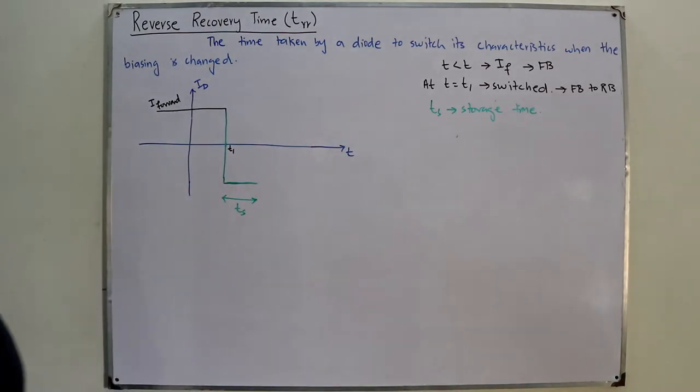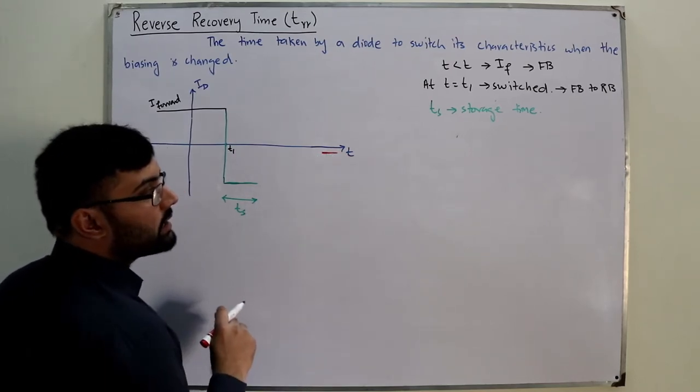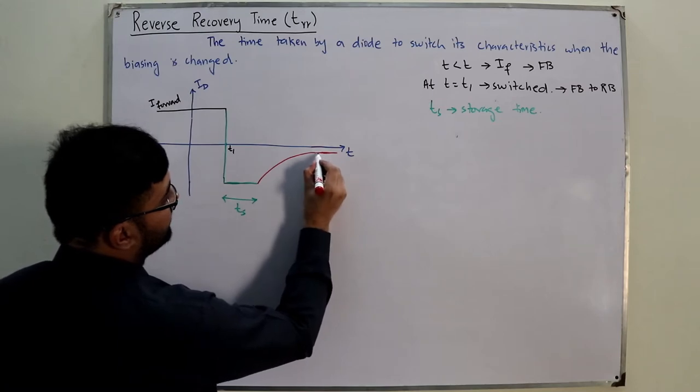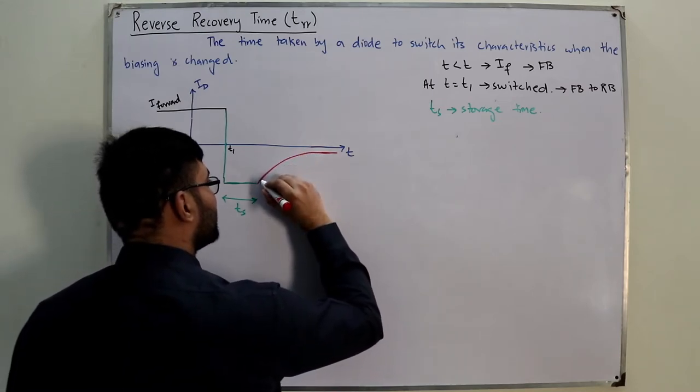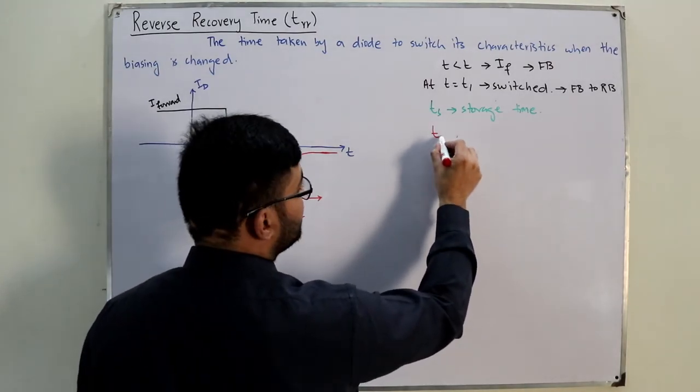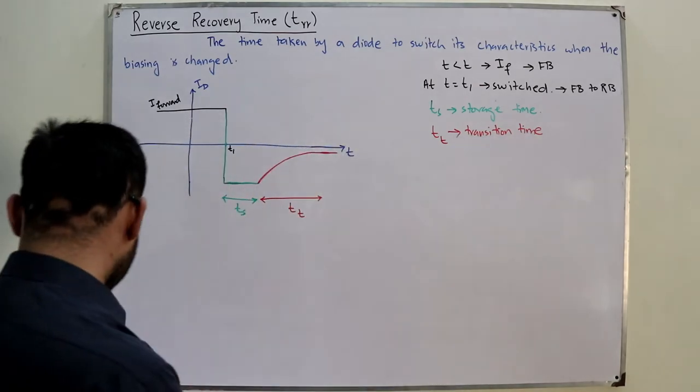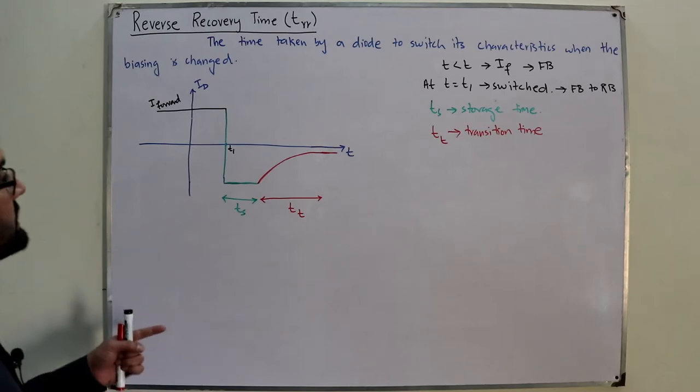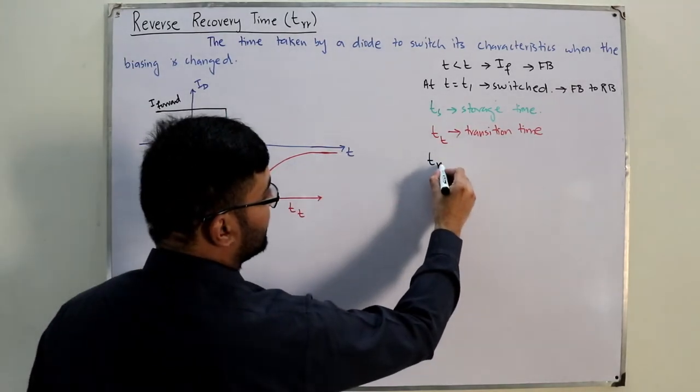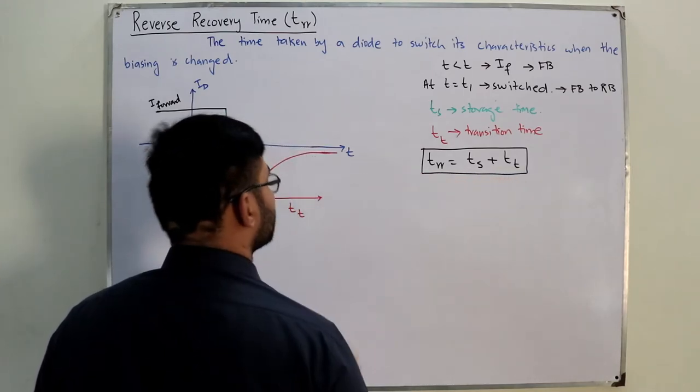Now what will happen? Now it will come back to the reverse state. Let's say it reaches this value and the time taken to reach the final value, this is called the transition time. So T_T is the transition time and the reverse recovery time that we say, it is the total time taken to switch the characteristics from this one region to this final region. Which means that this t_rr is equal to T_S plus T_T. And now I believe this is clear.